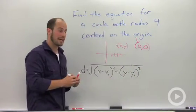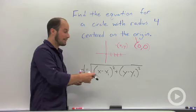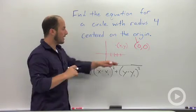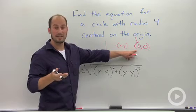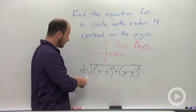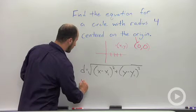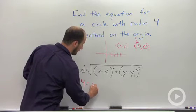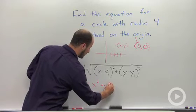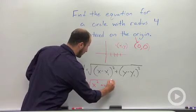All we have to do is recognize that our distance from the origin to our point is just our radius, which is 4. The point we know is (0, 0), so we can plug in 0, 0 for x₁ and y₁. What we end up with is 4 equals the square root of x² plus y².